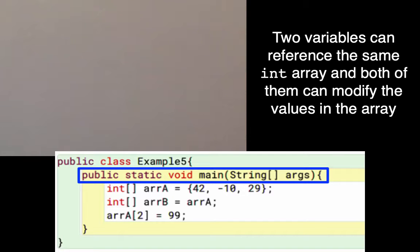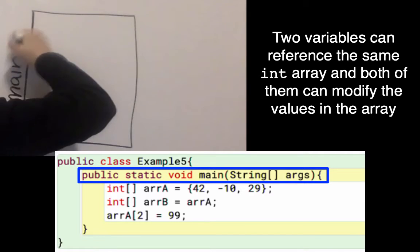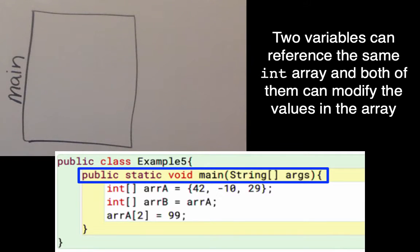Whenever I run my class, I run the method public static void main String[] args. I'll draw a stack frame to keep track of my local variables and write the name of the method on the side.